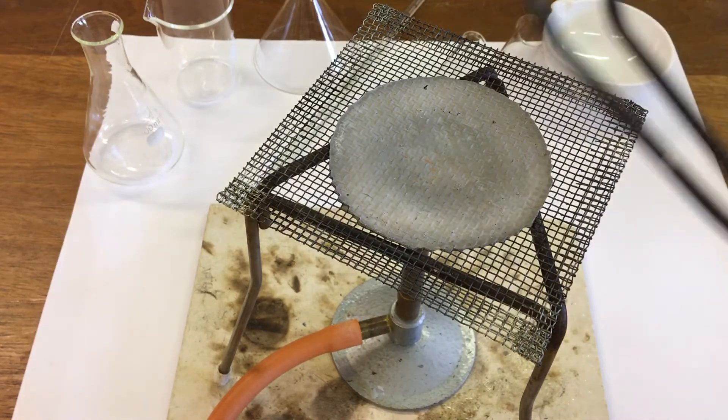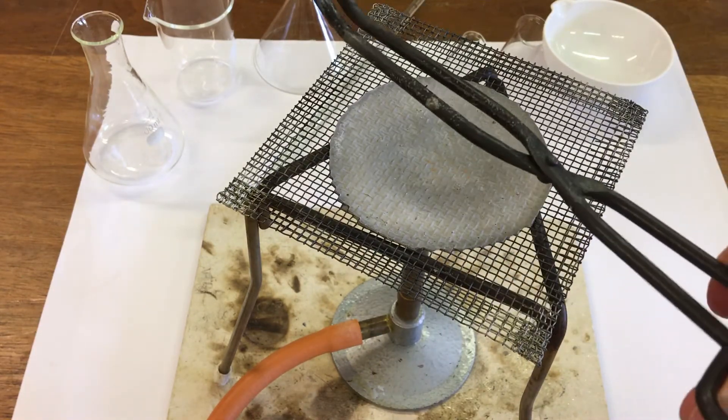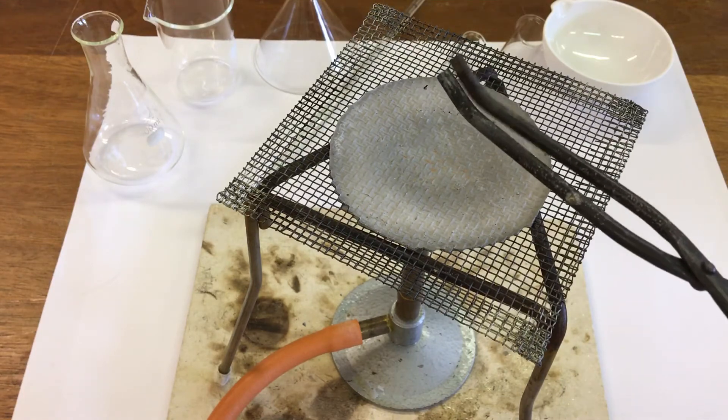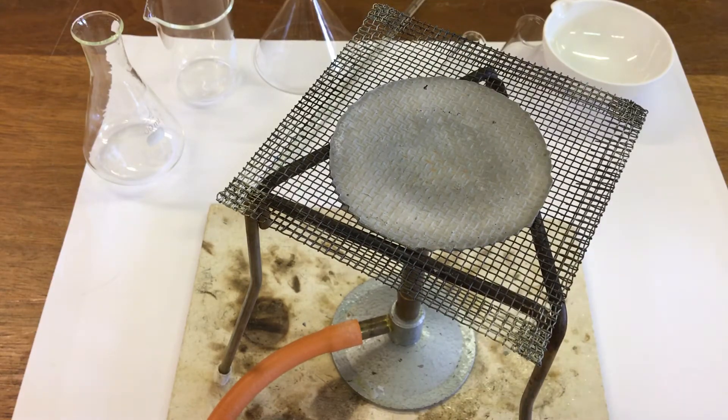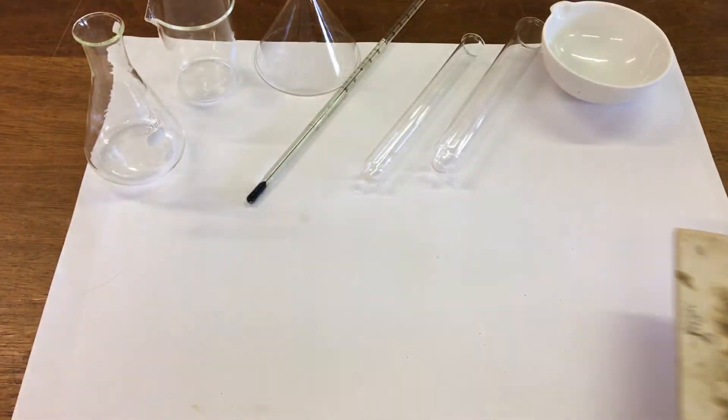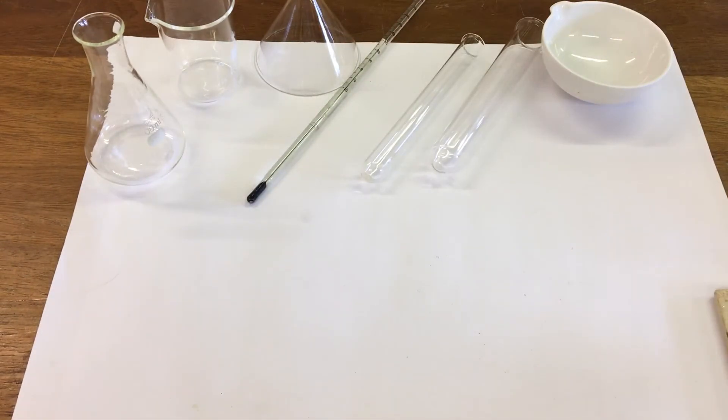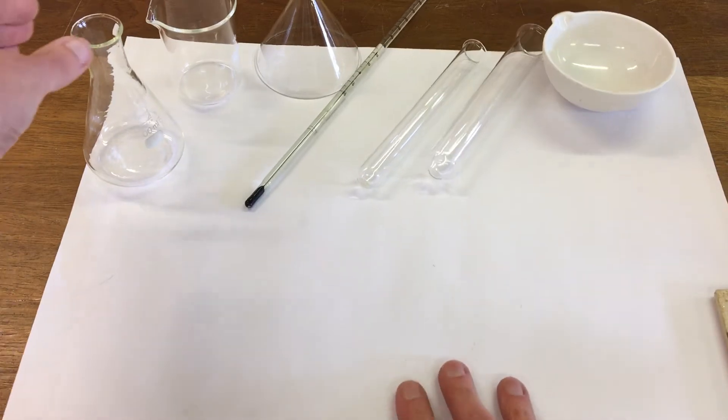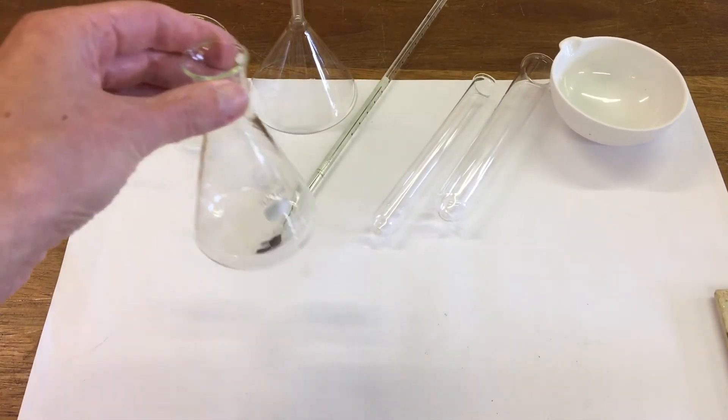Next we have some tongs used for holding hot things. The next item is a conical flask. This is a piece of glassware, so that's a conical flask.